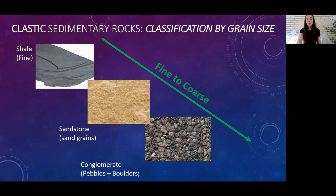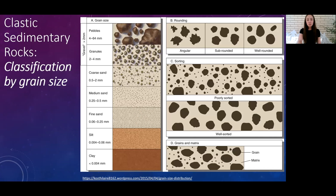Conglomerate is the term used when the clasts — the pebbles within the rock — are rounded. If the clasts are angular and look really sharp, then the rock is termed breccia. To get more specific, grain size, angularity and roundness, and sorting are all ways to classify clastic sedimentary rocks.